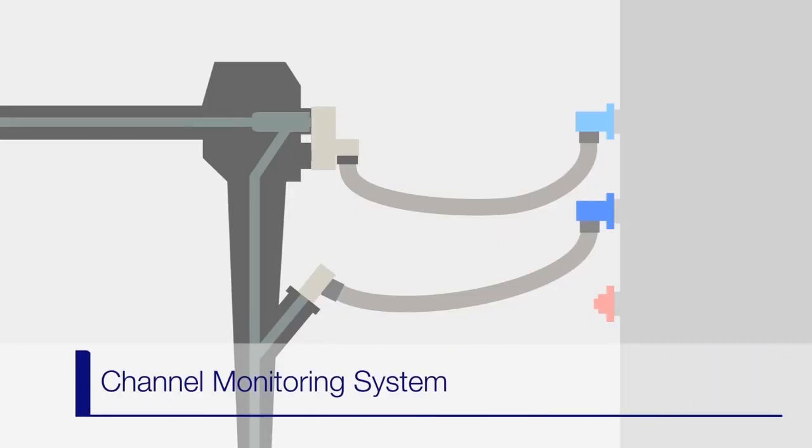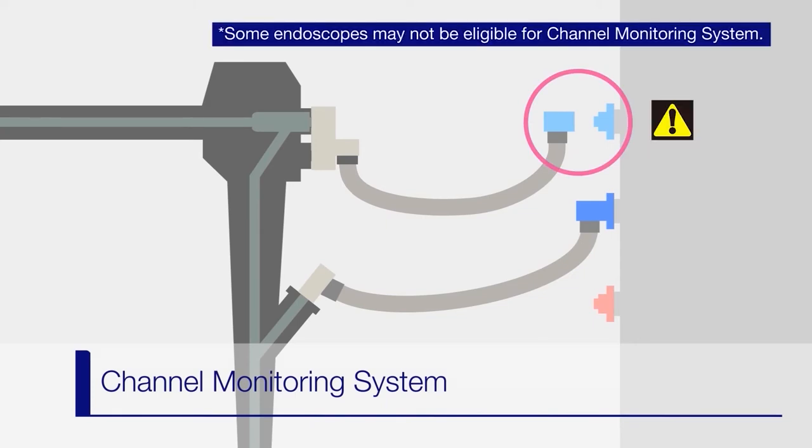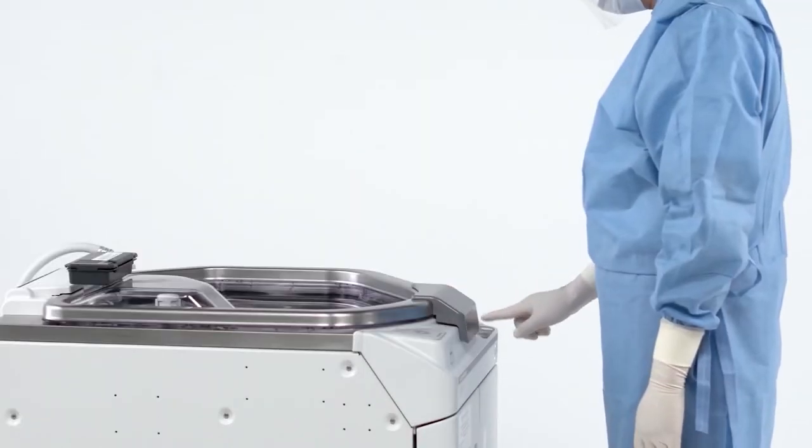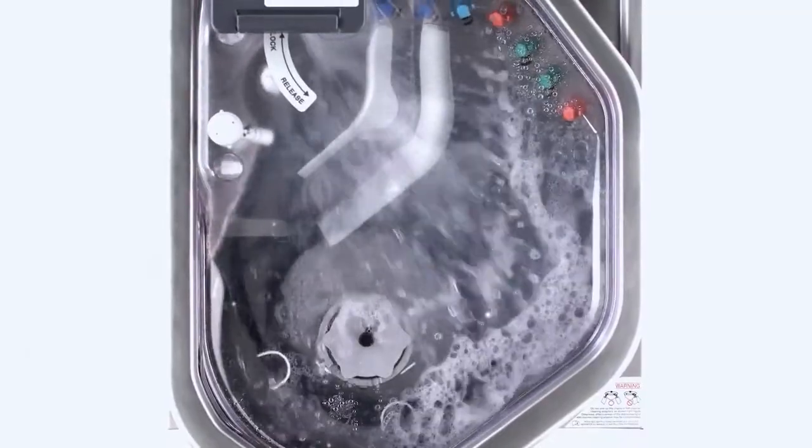The OER Elite also features a channel monitoring system that automatically detects connecting tube errors and suction channel blockages. This helps to mitigate risks associated with human errors and enables consistent operation of the reprocessor.